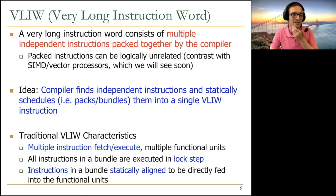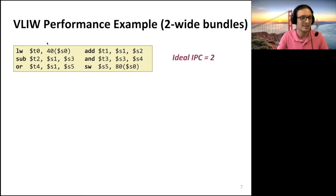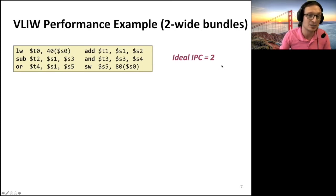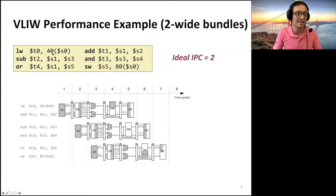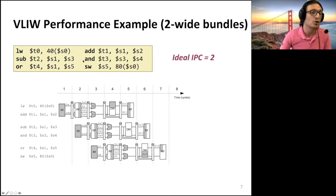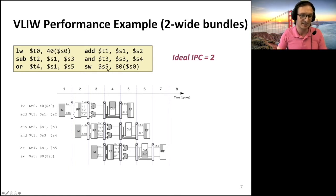In a VLIW execution example with two-wide bundles, the ideal IPC should be two, assuming the compiler can pack independent instructions and there are no stalls. In this case we achieve that ideal IPC of two because the compiler has packed independent instructions into each slot with no bubble-causing dependencies.